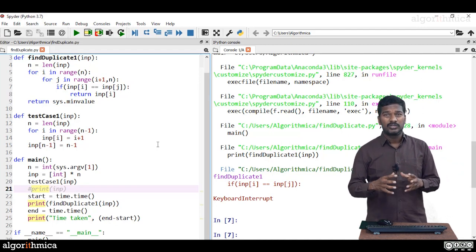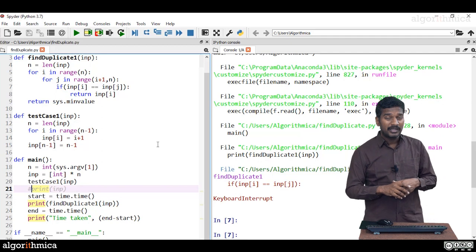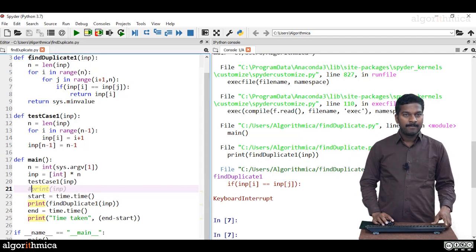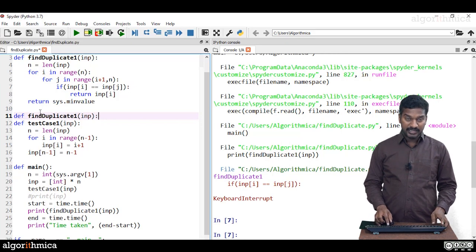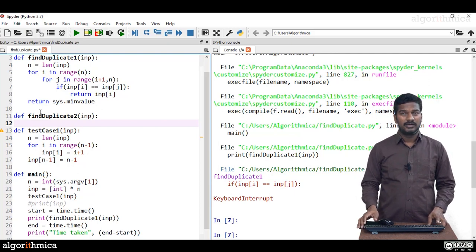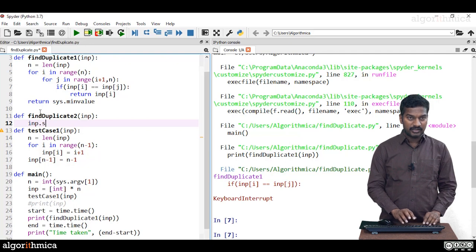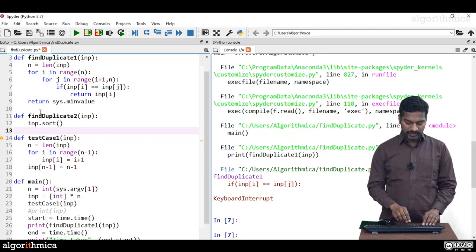Now we go to solution number two which is n log n algorithm. Theoretically it's doing better than n square algorithm, but in practice how well is it doing? Let's experience this. Let me copy the find duplicate function prototype and name this as find duplicate two.